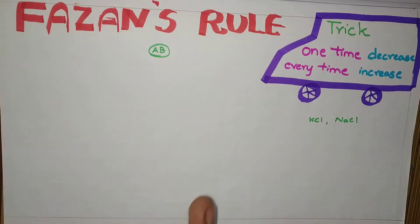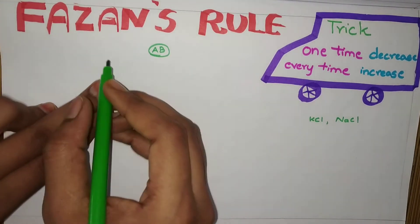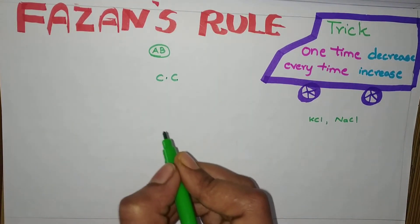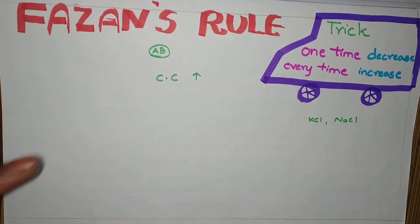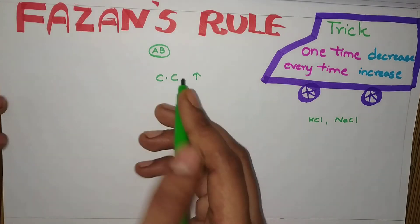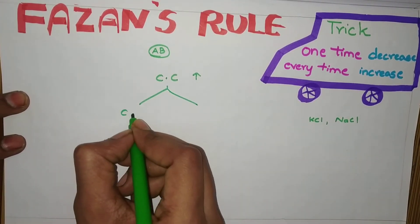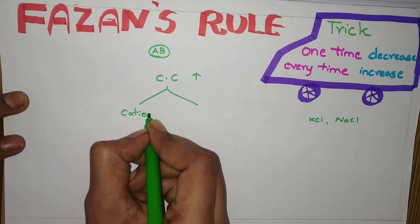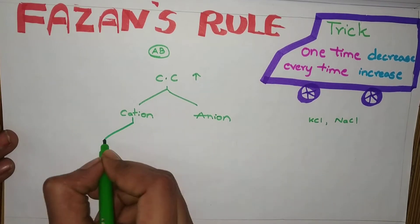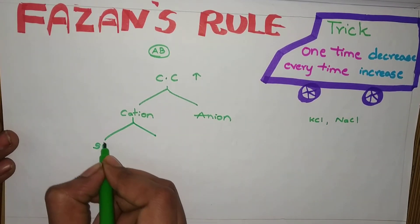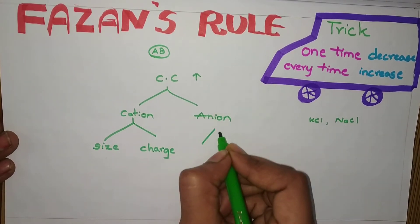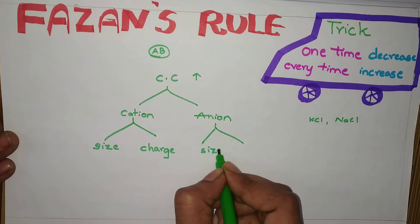So here I will give you a chart. Fazan's rule talks about covalent character, right? Covalent character increases. When it increases, first in the compound, see the cation and anion. In cation, you have to see size, charge. In anion also, see size, charge.